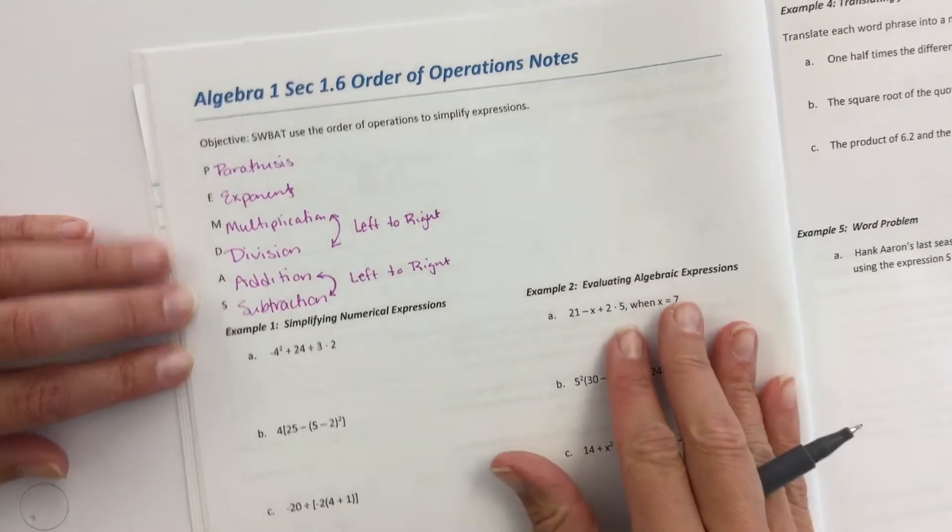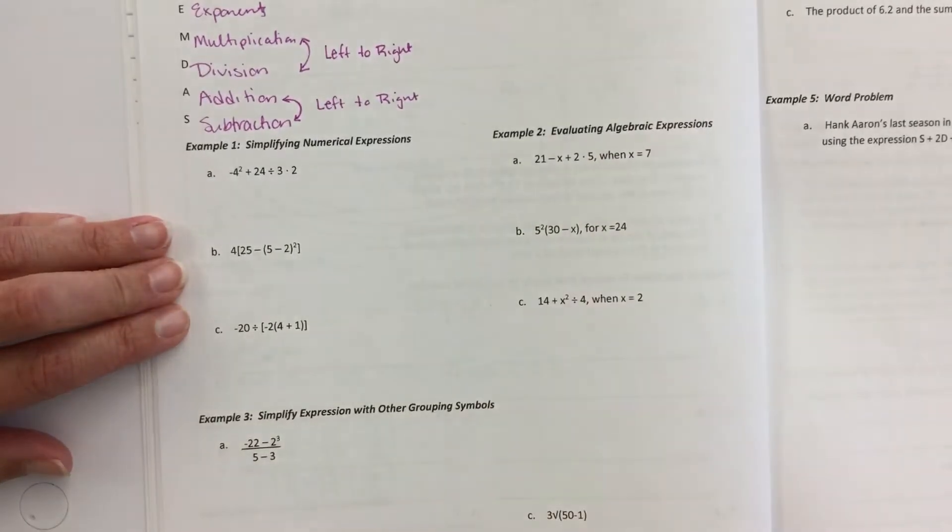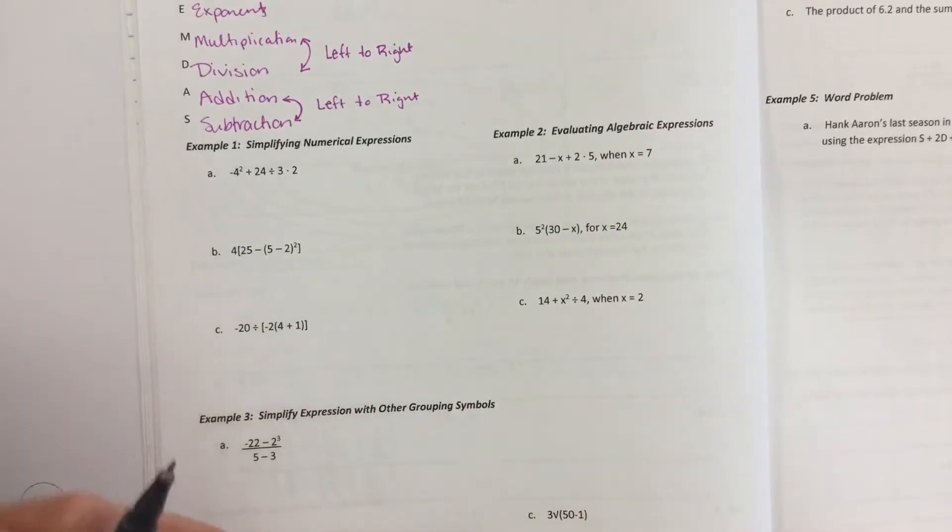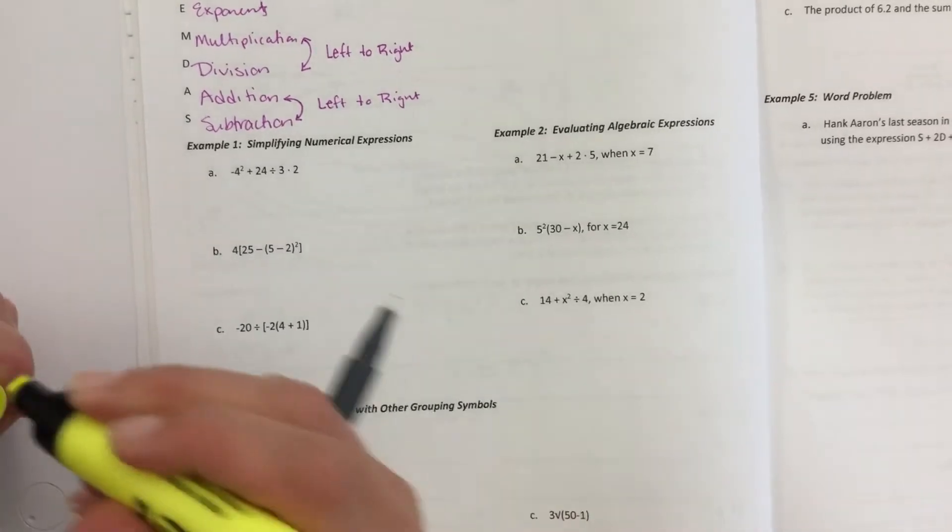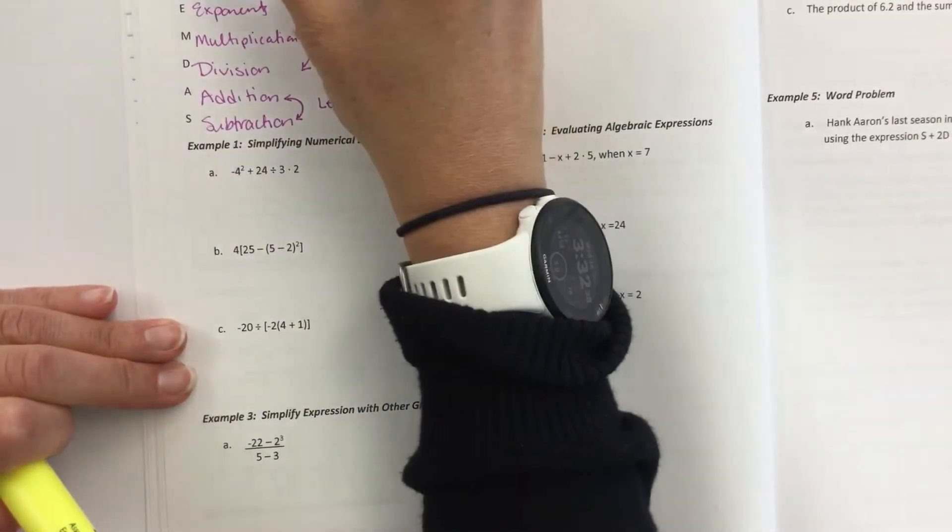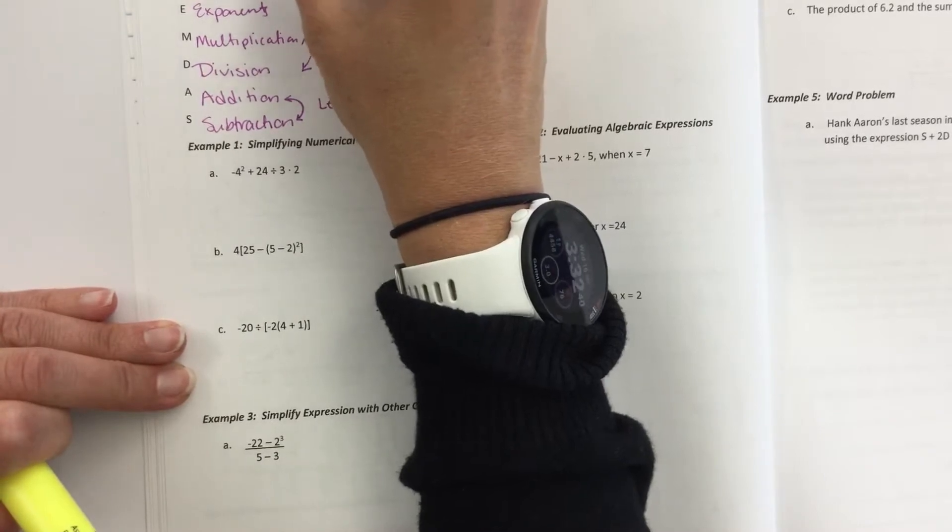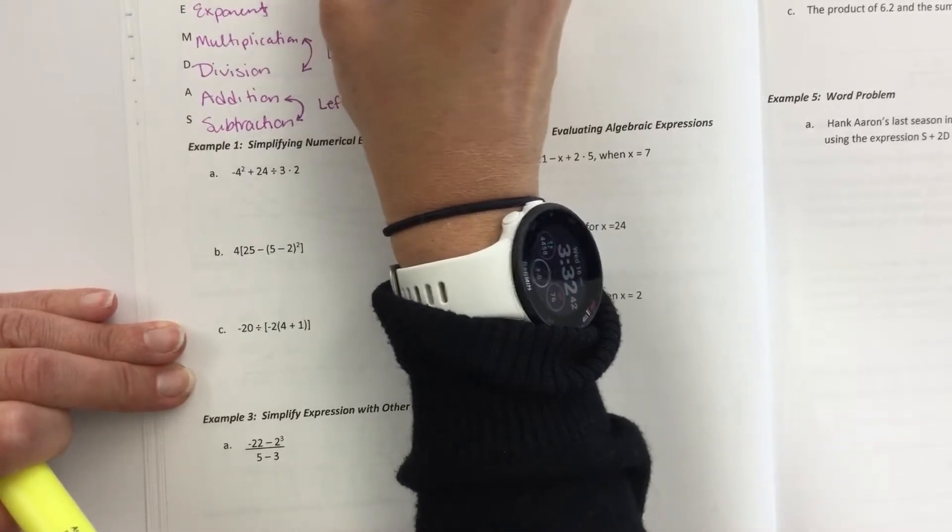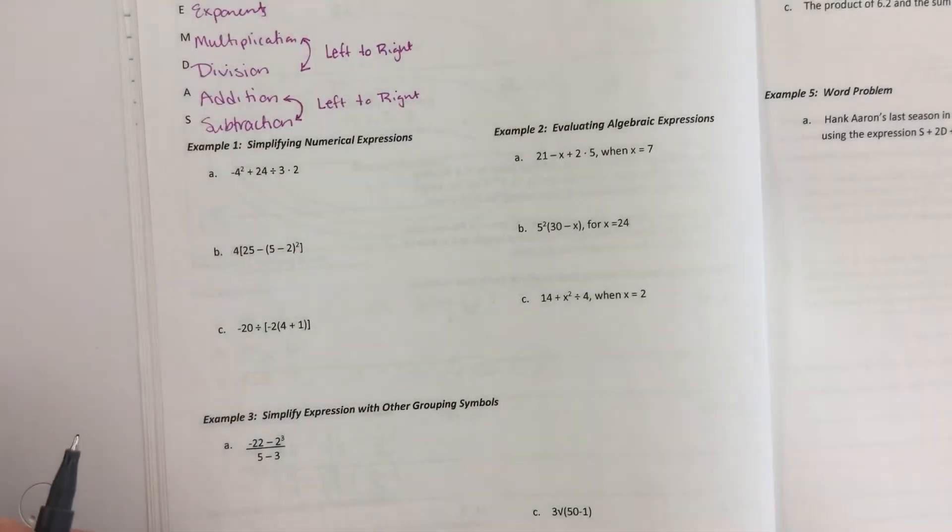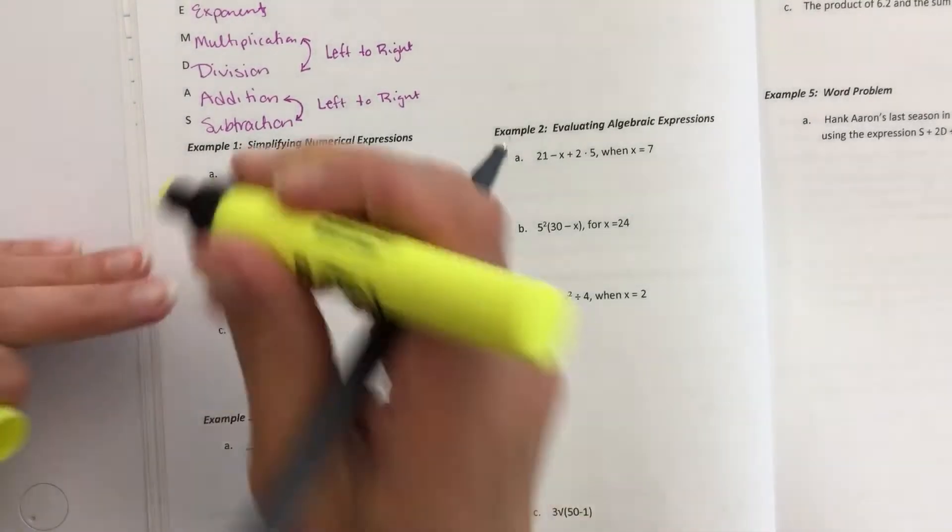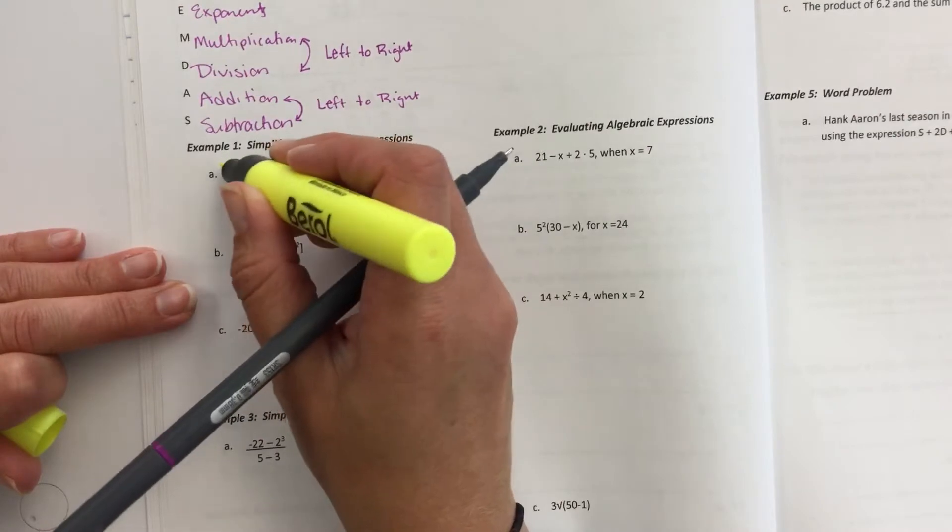Okay, so we're going to go through and just do a few examples. I put a little bit harder ones in here to give you guys some practice. So the first one, there's no parentheses. Oh man, I spelled that word wrong. Parentheses. How embarrassing.